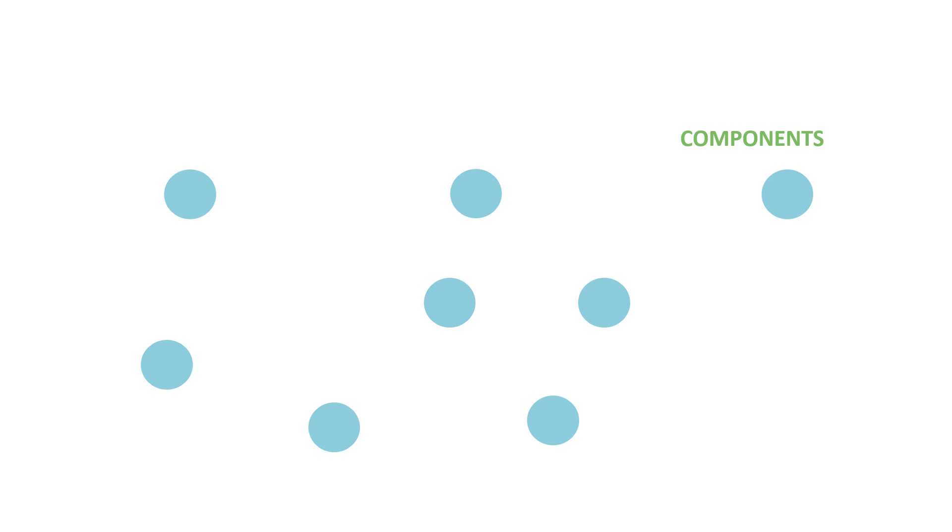A graph is basically a representation of a system or the workings of specific components of a system. When we describe what a graph is, we have some components which are objects of some sort of system. Those are represented by dots, also known as vertices or nodes — they are just your components of whatever system you are investigating.